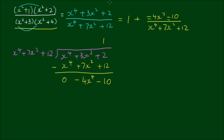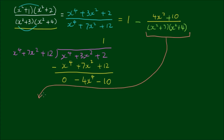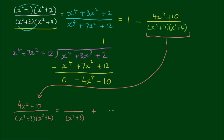The negative is common, so we factor it out, giving 1 minus (4x² + 10) over the denominator, which we rewrite as (x² + 3)(x² + 4), the original factored form. We can now separate the denominator using partial fractions.